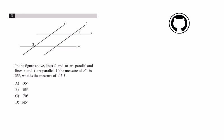Question number three states, in the figure above, lines L and M are parallel, and lines S and T are also parallel. If angle one equals 35 degrees, then what is the measure of angle two?